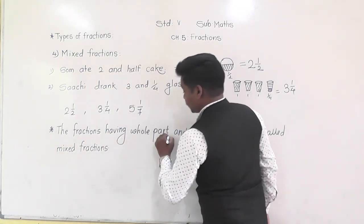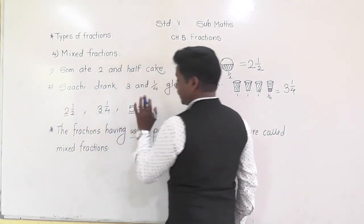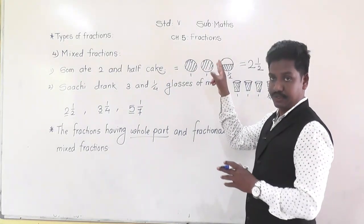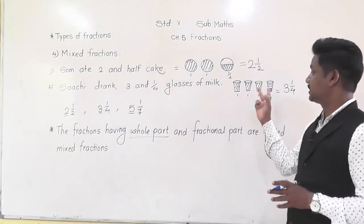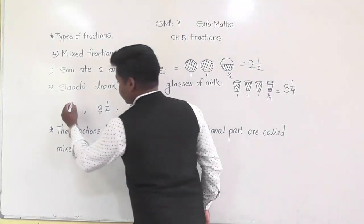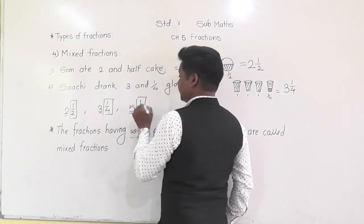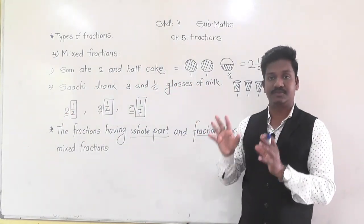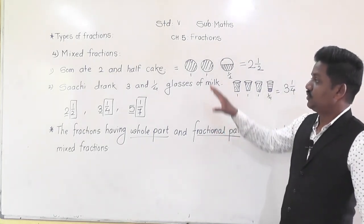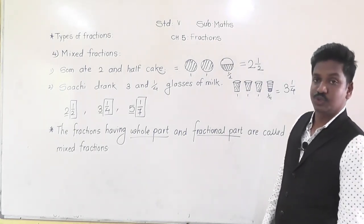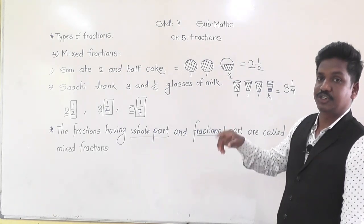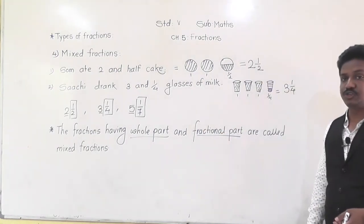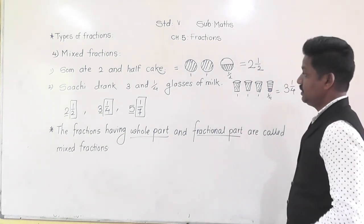The whole part — for example 2, 3, 5 — indicates that a whole figure is complete. The fractional part — like 1 by 2, 1 by 4, 1 by 7 — is called the fractional part. So the fractions having whole part and fractional part are called mixed fractions. Pause this video, write this in your notebook, and then we are going to learn how to convert mixed fractions into improper fractions and vice versa.